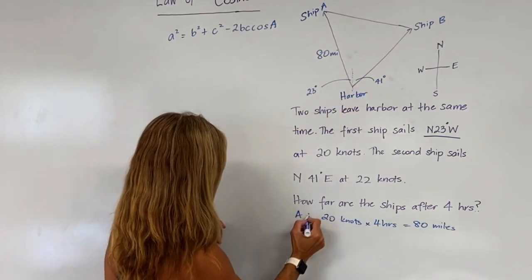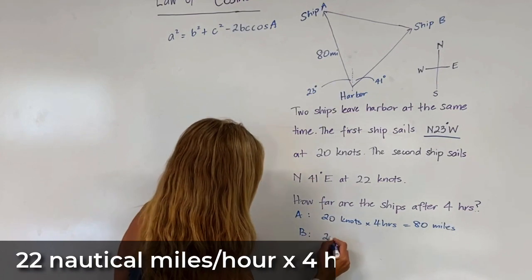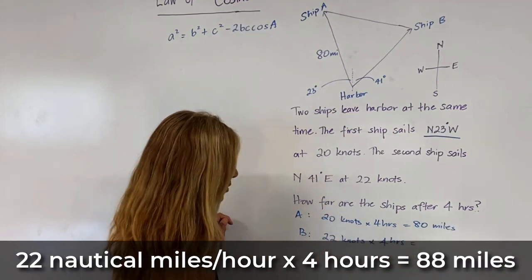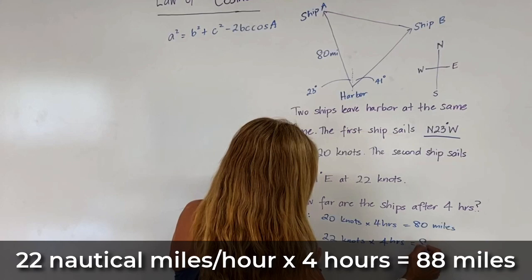Similarly, for ship B: 22 knots for four hours. So ship B has traveled 88 miles.